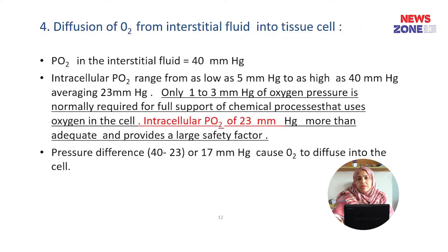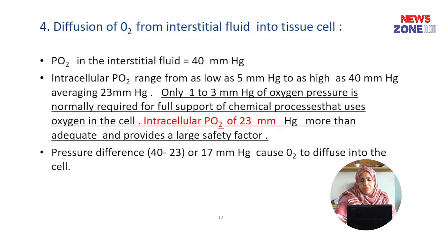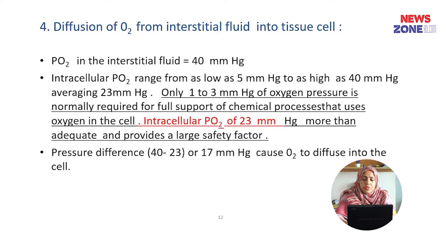Number 4, the diffusion of oxygen from the interstitial fluid into the tissue cell. Partial pressure of oxygen in the interstitial fluid is 40 mmHg. Intracellular partial pressure of oxygen ranges from as low as 5 mmHg to as high as 40 mmHg; the average is 23 mmHg. This is more than adequate and provides a safety factor. So the pressure difference is 17 mmHg which causes oxygen to diffuse into the cell.